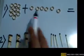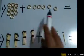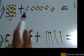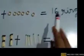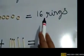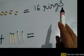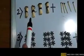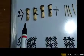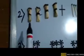One ten plus six singles, six units, is equal to 16 rings. Now we will proceed to our next objects.